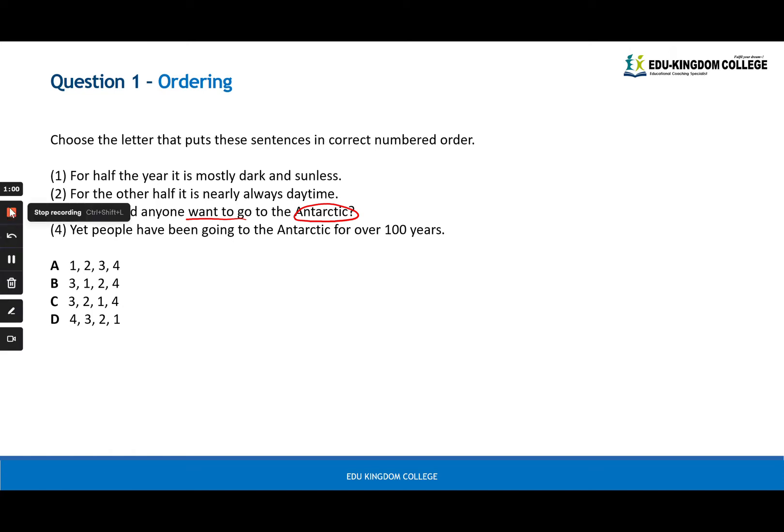For me, the first one would be number 3. Number 3 provides a starting point as to what we are going to be exploring, which is the Antarctic. Why would anyone go to the Antarctic? And then after that, the next statement would be number 1. For half the year, it is mostly dark and sunless. So this is linking to this idea of why would anyone want to go to the Antarctic. The next one would be number 2. For the other half, it is nearly always daytime. And now we are wrapping up with 4. Yet, despite this, people have been going to the Antarctic for over 100 years. So that sequence would be option B.